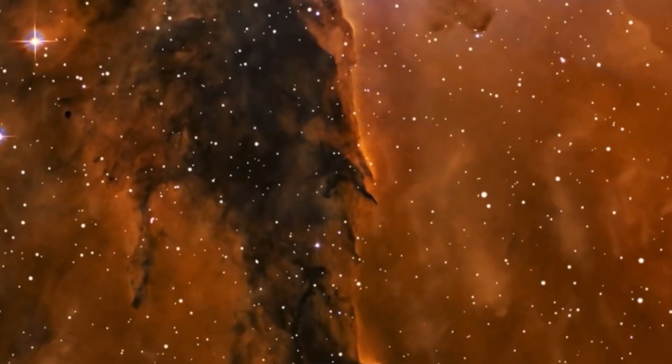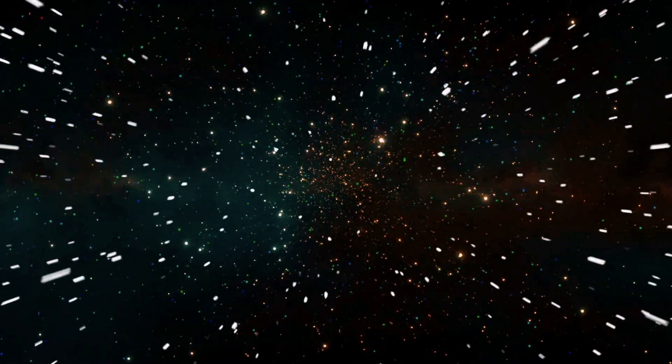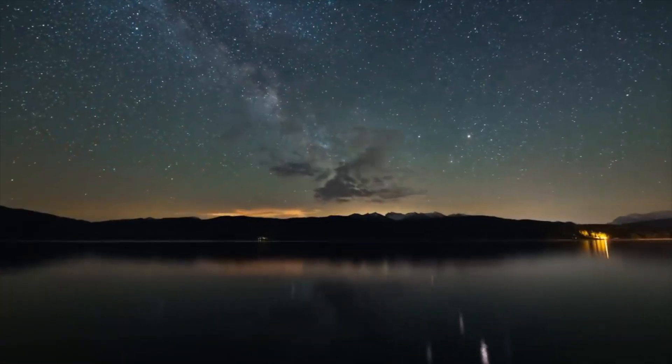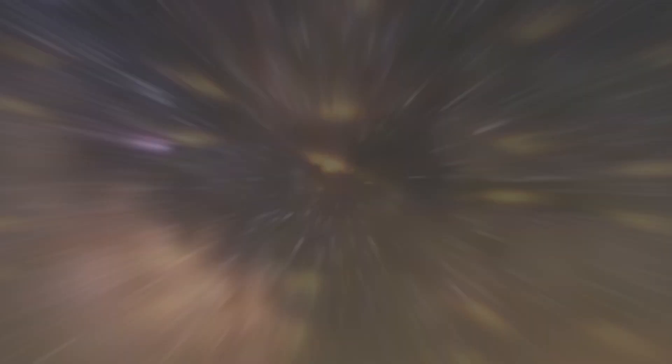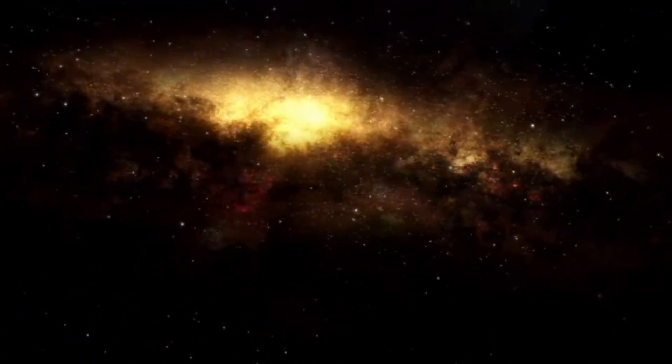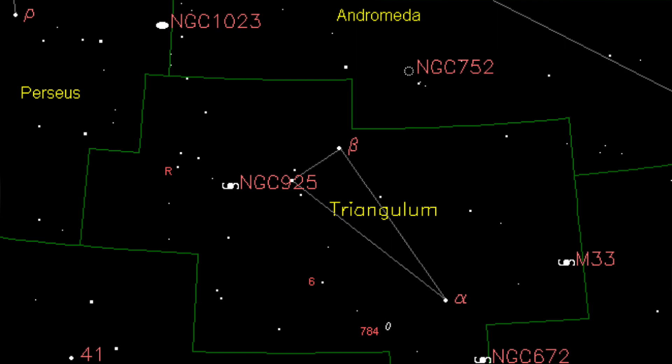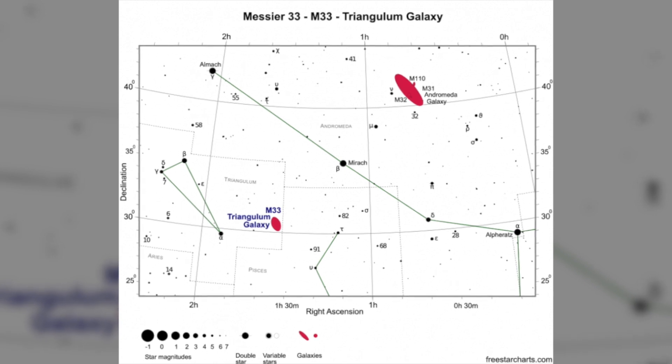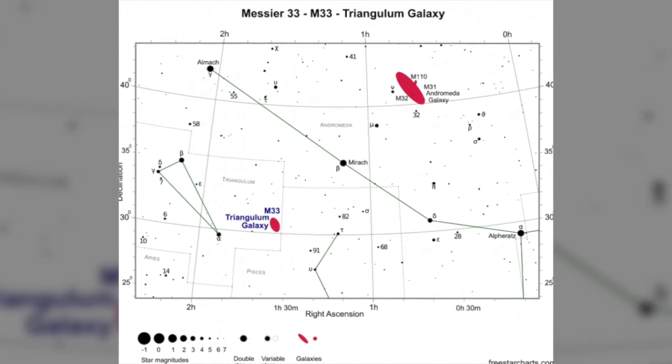The local group consists of three main galaxies, the Milky Way included, which are all located within five million light-years of Earth. The largest of these galaxies is Andromeda. The Milky Way is the middle one, and the galaxy known as Triangulum is the smallest of the three. The group also includes about 50 dwarf galaxies that mostly orbit the large ones.